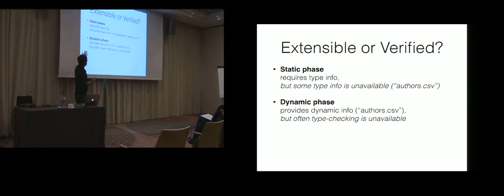In a static phase, the sort of traditional viewpoint of programming languages is there's these phases, static and dynamic. And in a static phase, we require type information, but sometimes type information is information we don't have, like in the case of the database of authors.